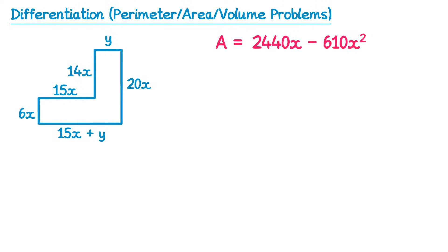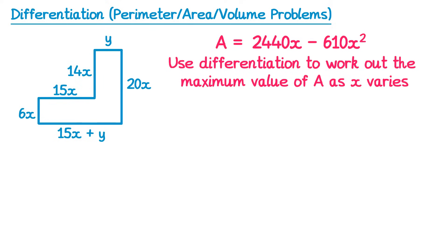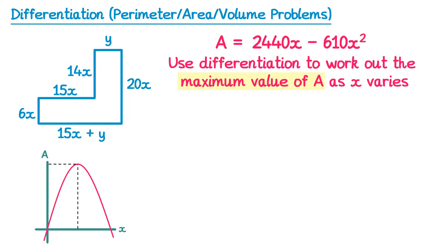Now on to the final part of the question: use differentiation to work out the maximum value of A as x varies. If you drew a graph of A against x it would look like an upside-down quadratic, because of the negative x squared term at the end. So we're interested in finding the maximum value of A, which corresponds to a stationary point. We know that at the maximum point the gradient is zero, so dA/dx must equal zero. Normally you're used to writing dy/dx, but here we've got dA/dx because our equation was A equals some function of x — so all you're doing is exactly the same process but with dA/dx instead.